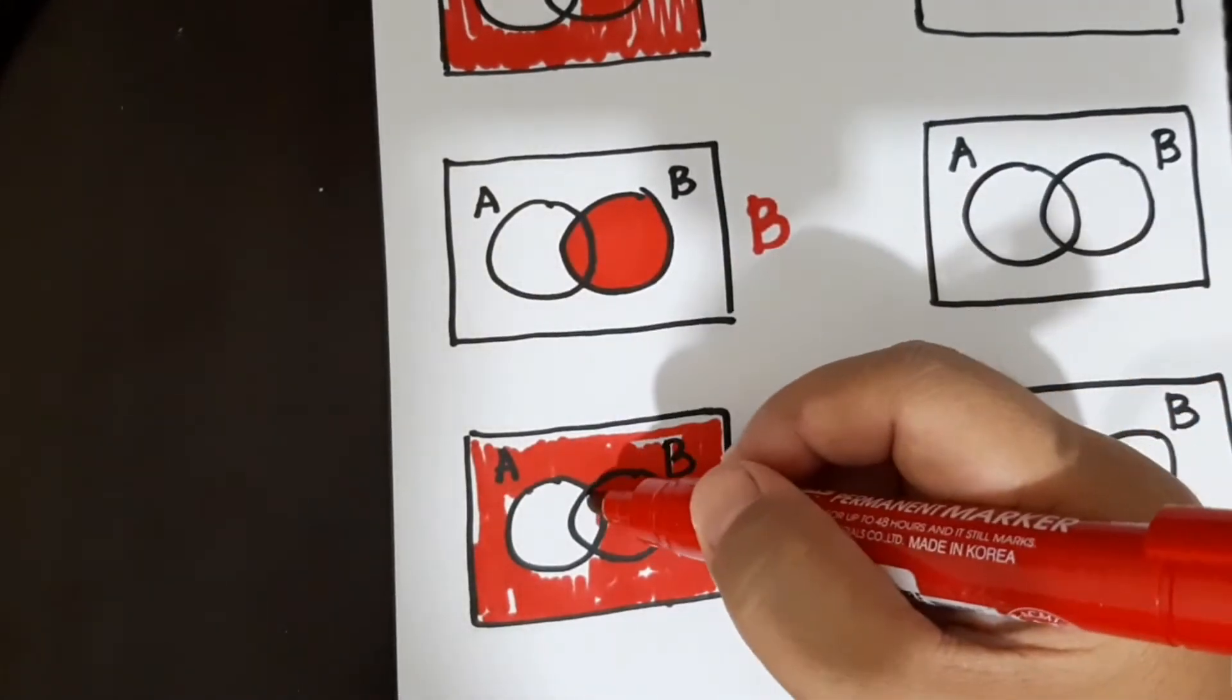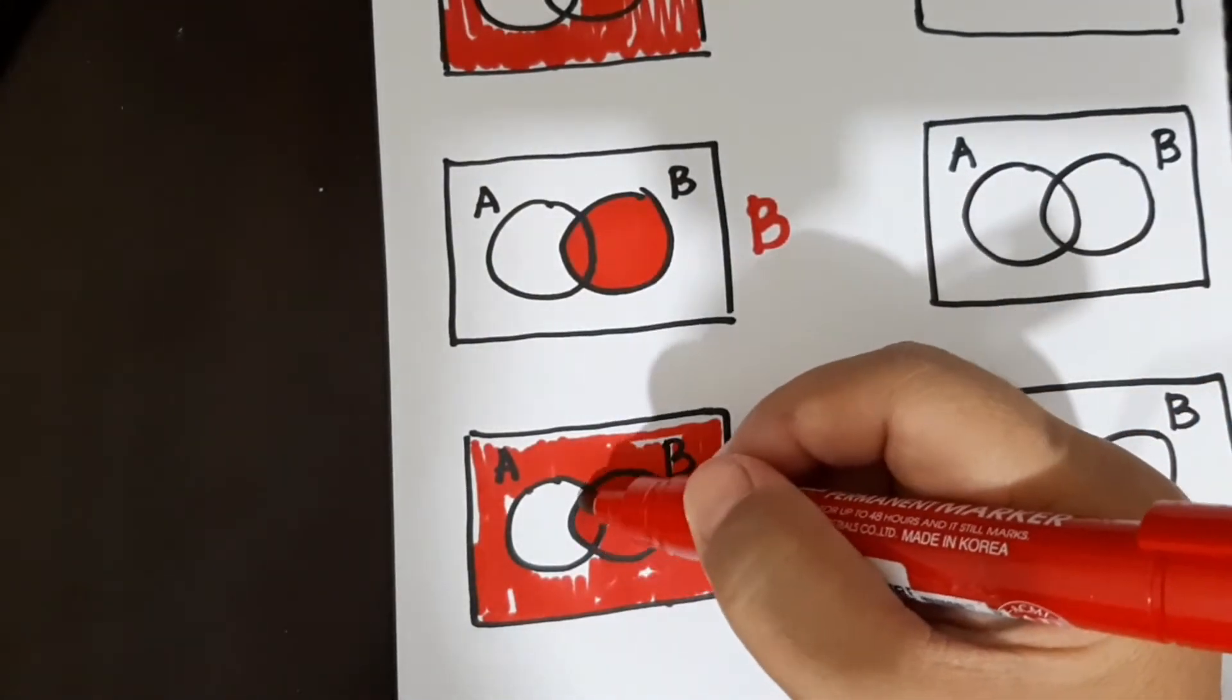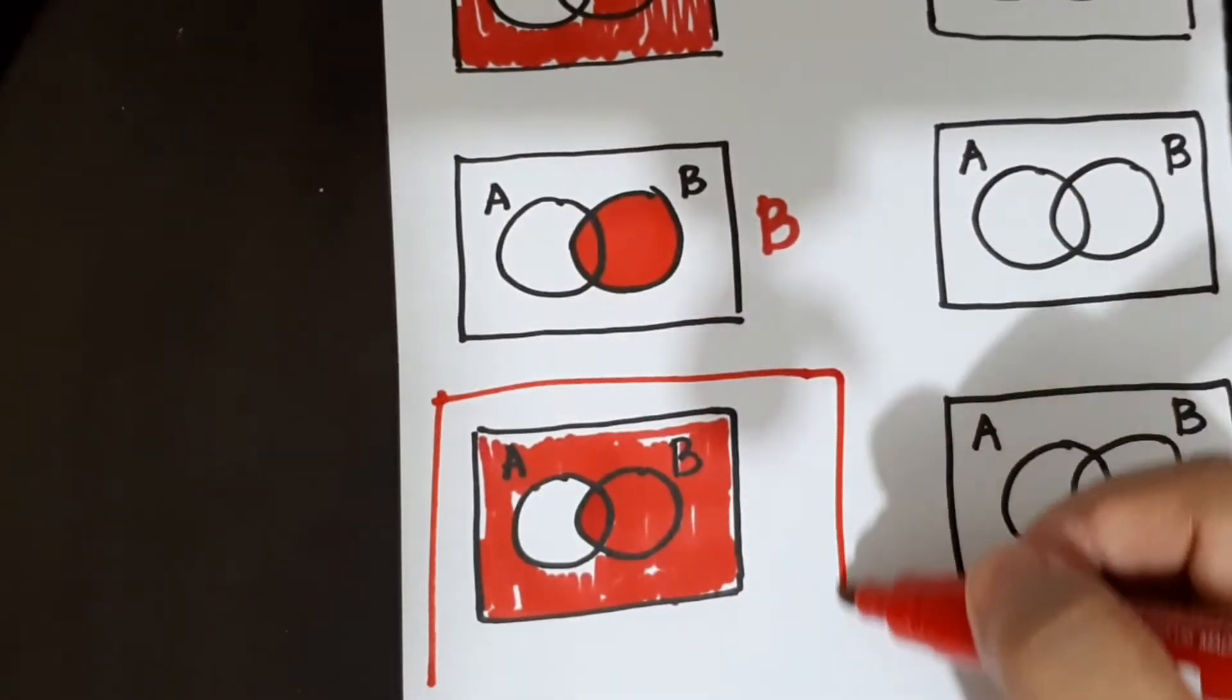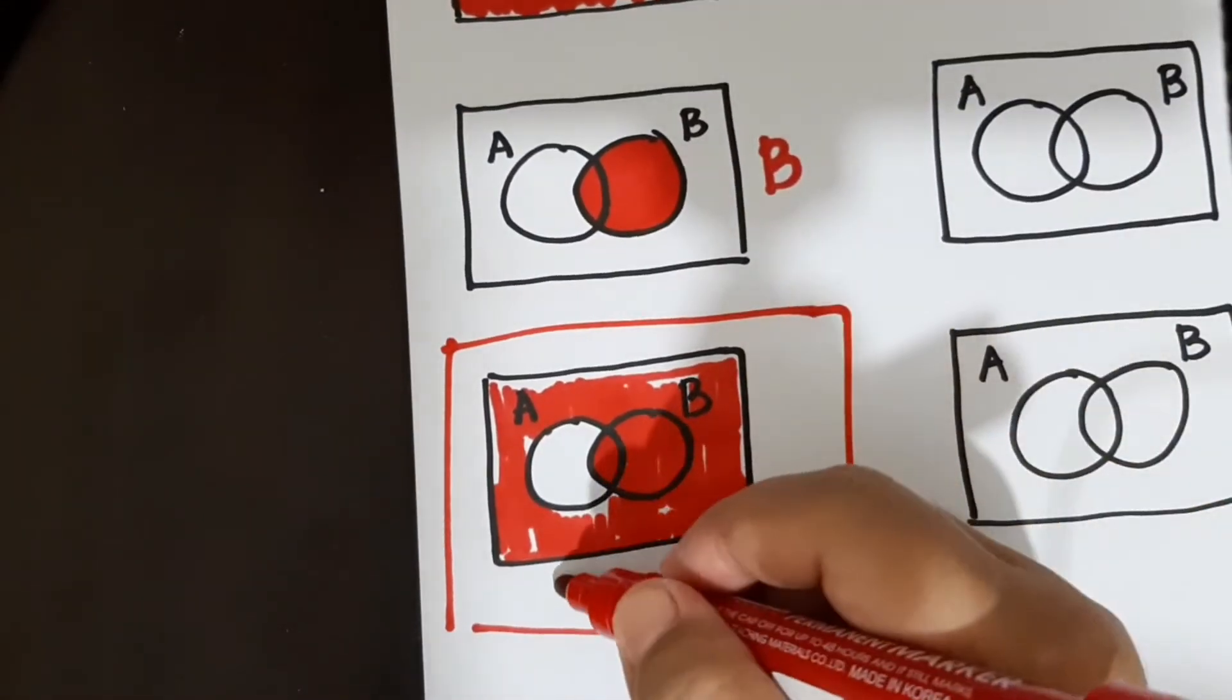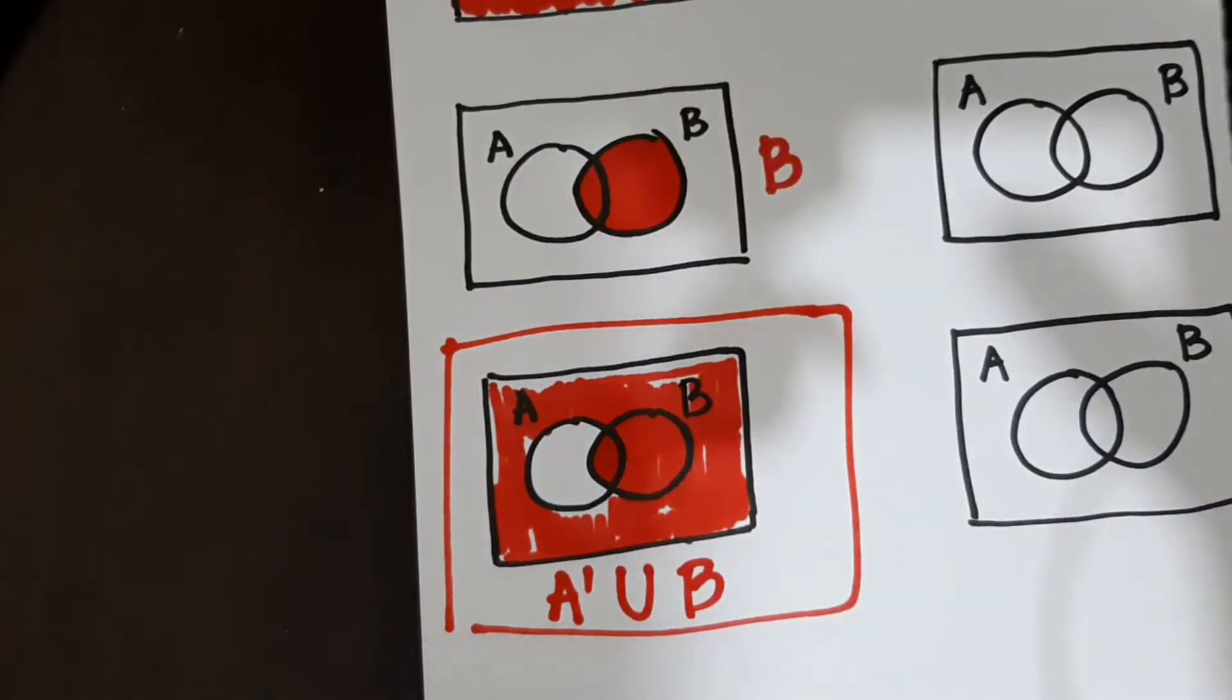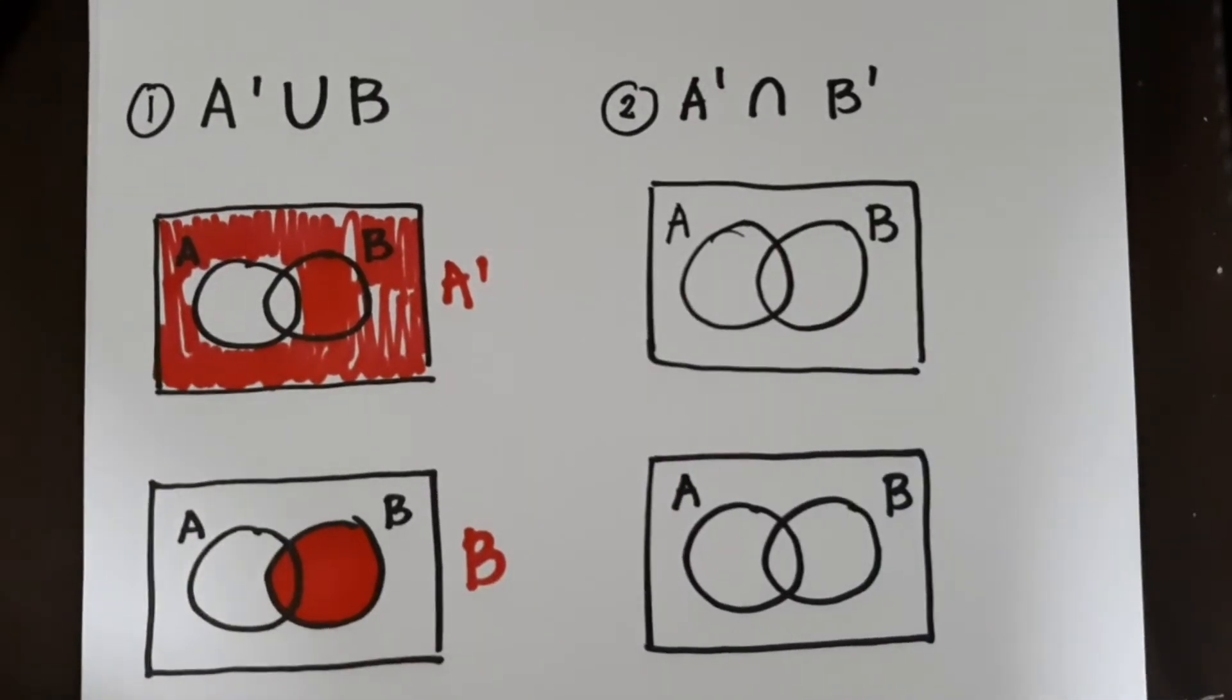So dito na lang yung kulang. So that will be your final answer. So this is not A union set B.